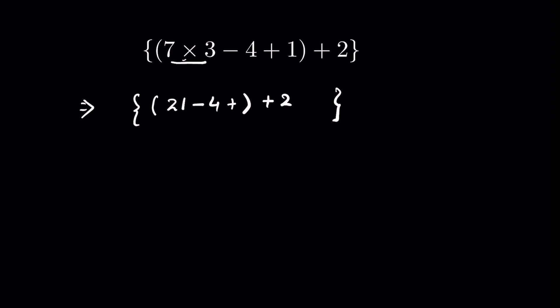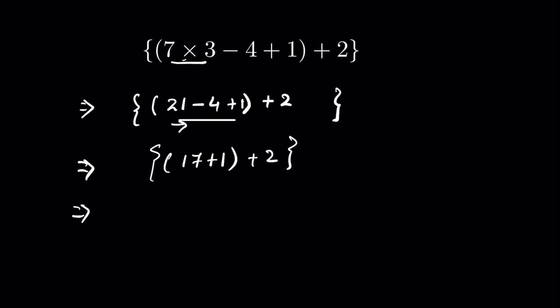After the bracket we have plus 2 in the curly bracket. Now inside the bracket: 21 minus 4 plus 1. We solve from left to right — 21 minus 4 is 17, then 17 plus 1 is 18. You can also add first since both have positive signs: 21 plus 1 is 22, then 22 minus 4 is 18 — either way the answer is 18. Remove the bracket and we have 18 plus 2 in the curly bracket, which gives 20 as your answer. This is how you solve brackets and the order of operations.